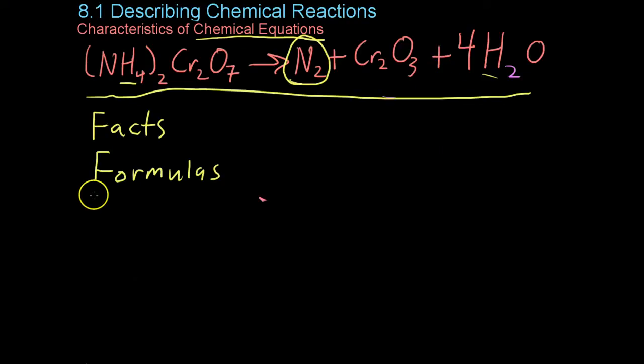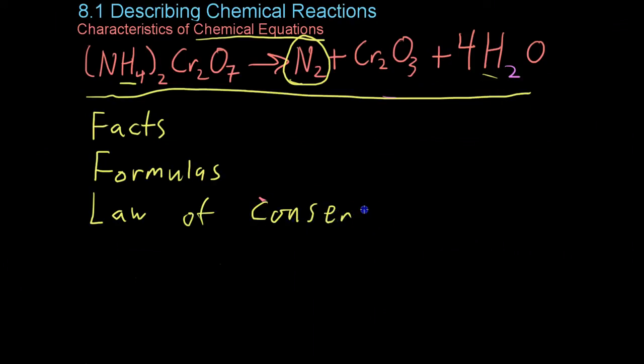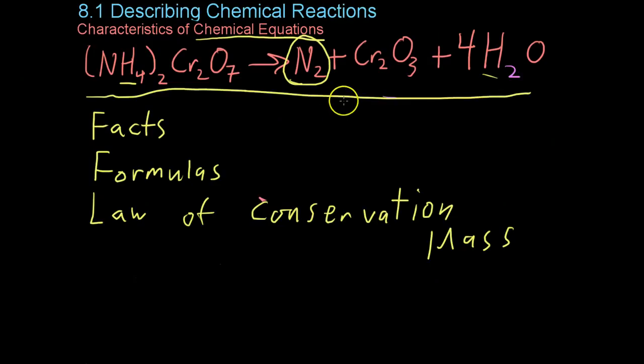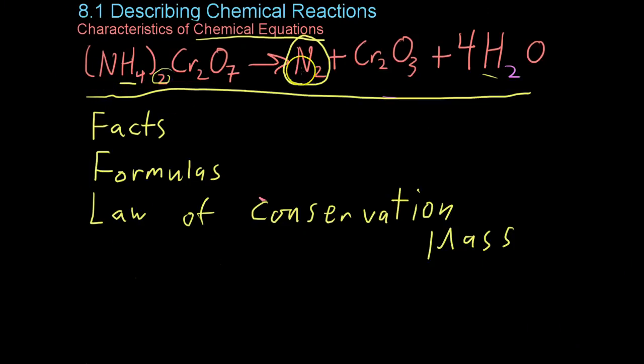Finally, chemical equations have to obey the law of conservation of mass. That is, you cannot create or destroy any atoms in most chemical reactions. Now, in order to compensate for this, since you can't change the chemical formula without changing the actual compound you'd be discussing, you'll notice that if you were to simply count up the number of nitrogen atoms over here using this subscript, you would get two nitrogen and two nitrogen, and then again, two chromium and two chromium.